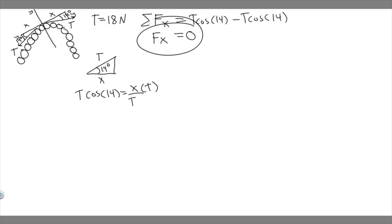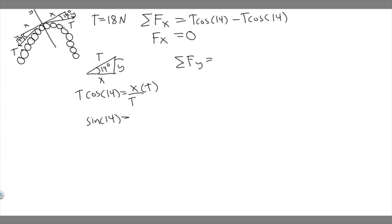So let's go ahead and do the y now. We're going to take the sum of the forces in the y. In the y it's going to be a bit different, because both of these forces are going down — instead of going in opposite directions, they're both going down — meaning we're actually going to get a nonzero number. The y component uses the sine of the angle: sine of 14 equals opposite over hypotenuse, so y equals t times the sine of 14.